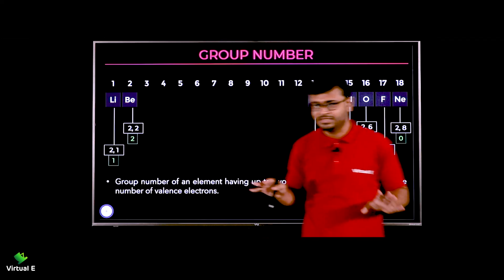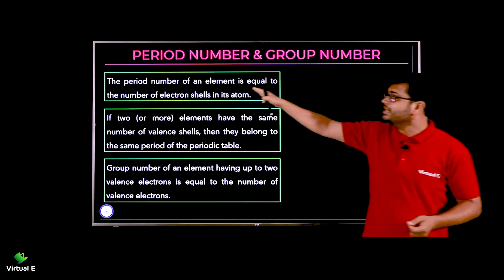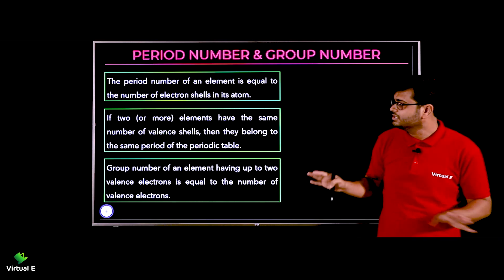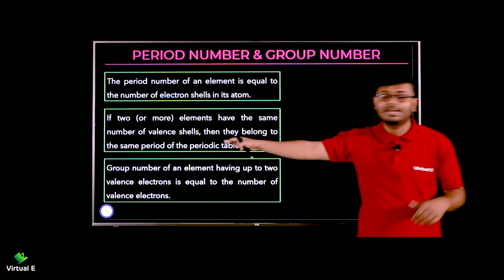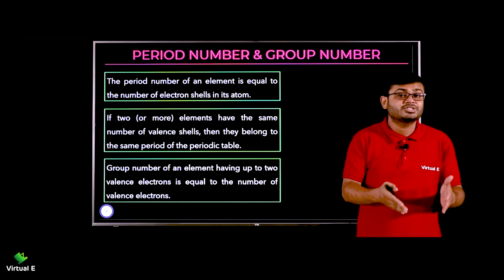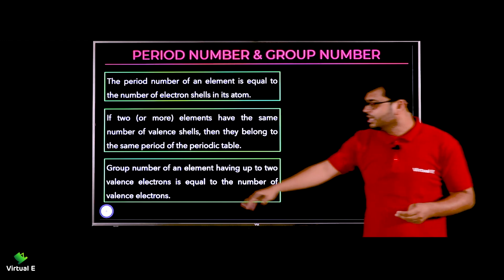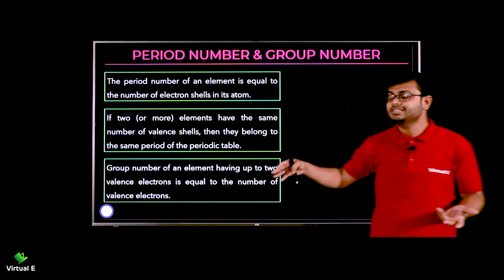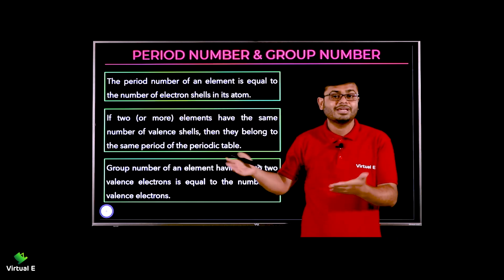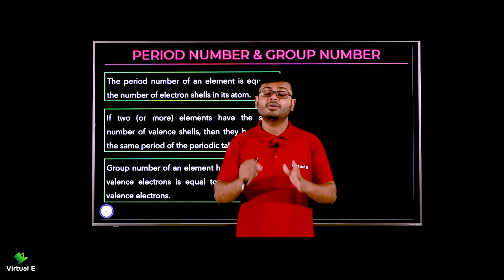To summarize: the period number of an element equals the number of electron shells in its atom. Elements with the same number of shells belong to the same period — for example, sodium and magnesium both have three shells, so both belong to period three. For group number: elements with up to two valence electrons have a group number equal to their valence electrons; for others it is 10 plus the number of valence electrons.